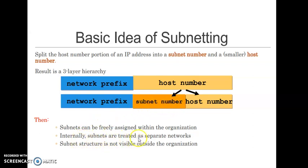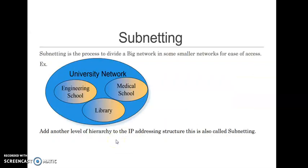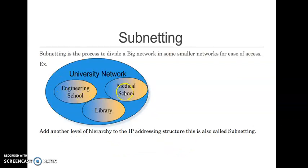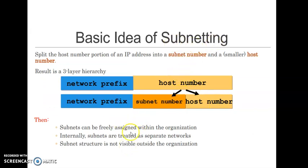Internally, subnets are treated as separate networks. So in the university example, internally they are treated as three different networks. However, this subnet structure is not visible to the outside organization — for the outside world it appears as a single network. This is a very good advantage of subnetting: the internal network is treated as separate networks, but to the outside world it appears as one single network.